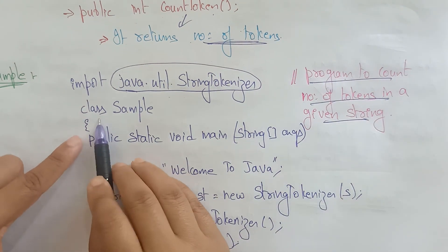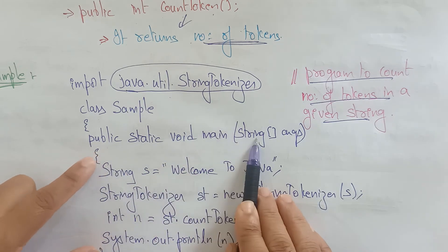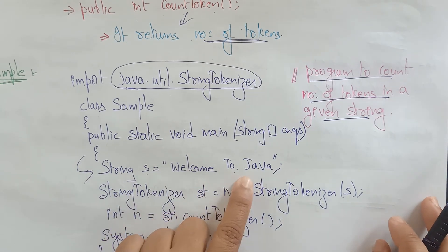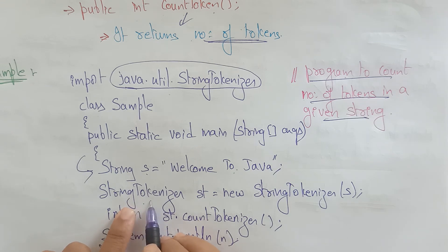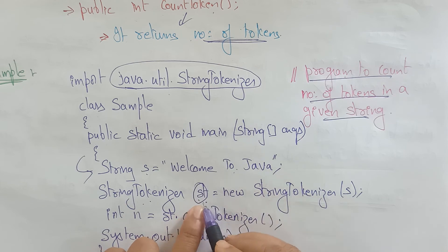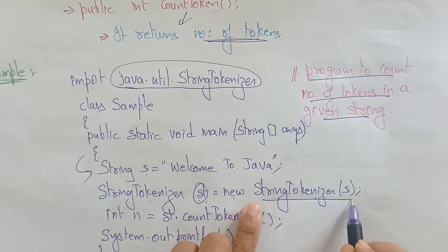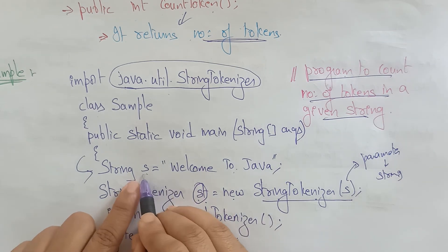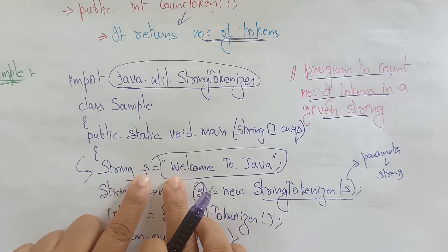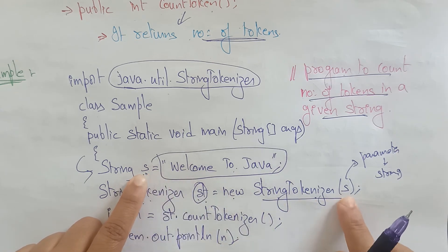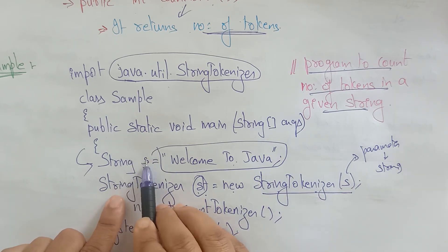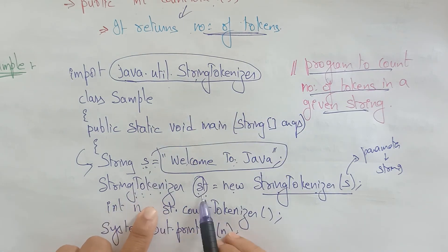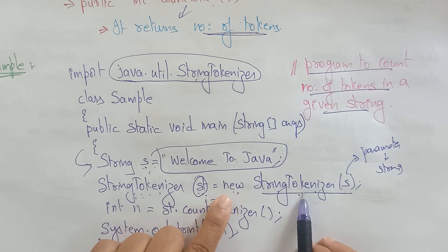Inside the main method: create a String — String s = "welcome to java". This object contains 'welcome to java'. Then call the constructor: StringTokenizer st = new StringTokenizer(s) — passing the string s into the StringTokenizer constructor. Now 'welcome to java' is held inside the StringTokenizer referenced by st.